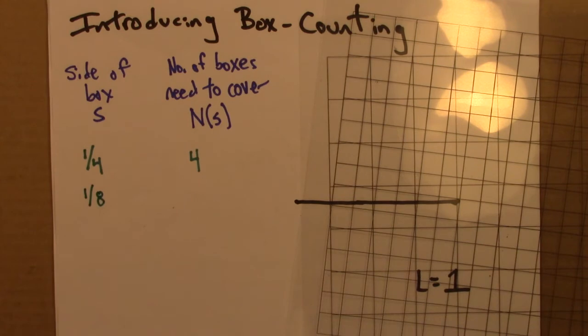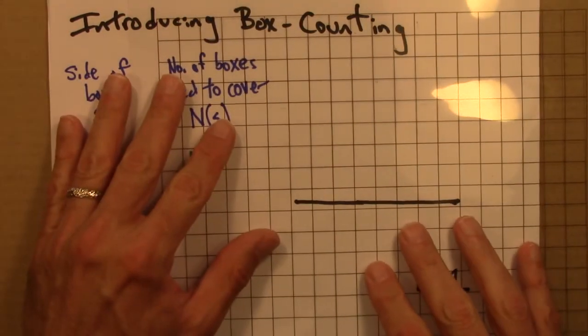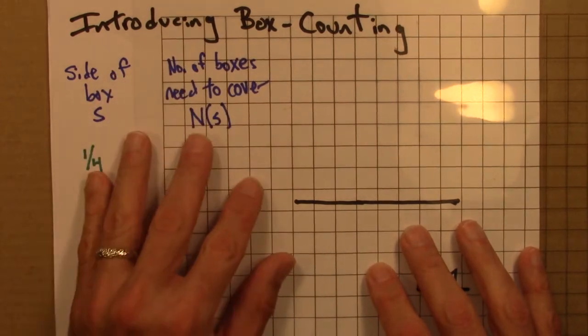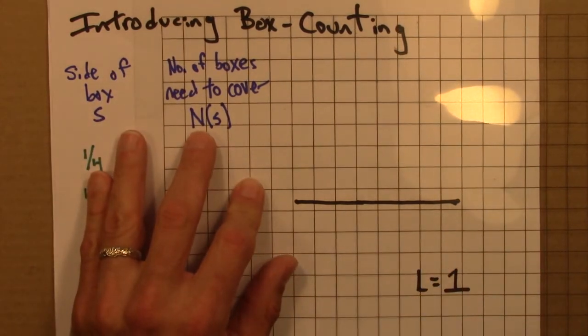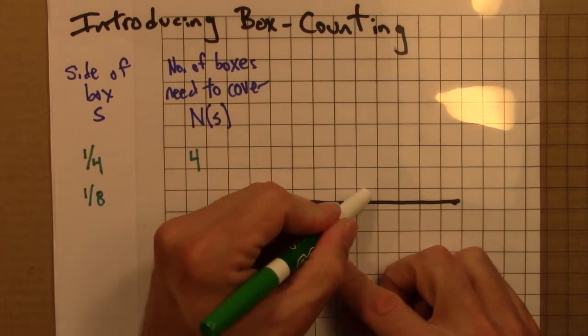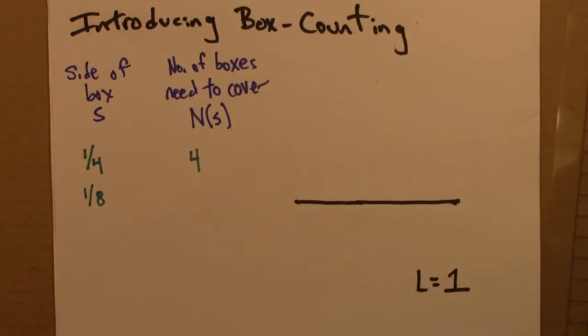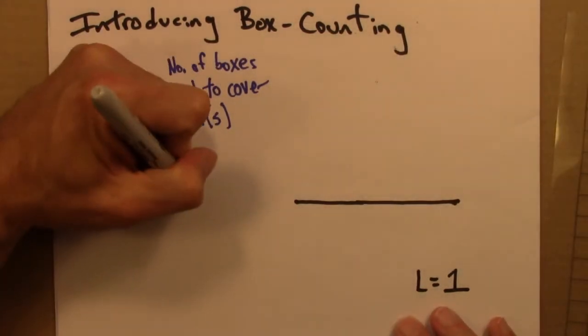So, side of box S is an eighth. And the number of boxes needed to cover, well, let's see. I'm going to line this up. And then I'm going to count. There's a reason this is called box counting. Let's see. One, two, three, four, five, six, seven, eight. Aha! Eight boxes to cover the line.